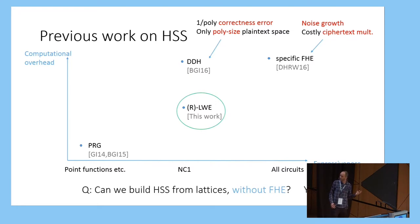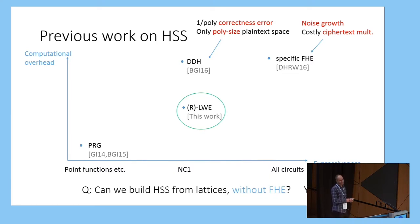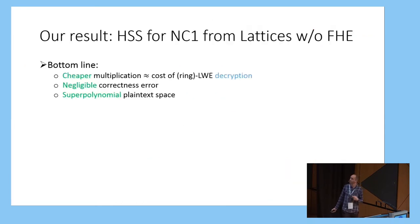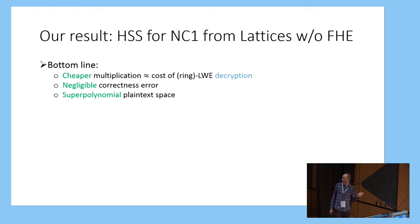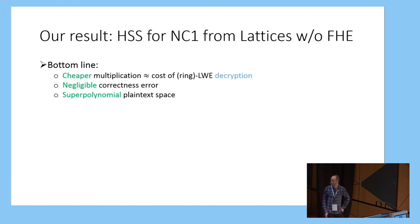The result we get fits somewhere in the middle of this picture: a construction of homomorphic secret sharing for NC1 circuits based on lattices, which is more efficient than FHE. The bottom line is that we avoid the costly homomorphic multiplication procedure present in all known fully or even somewhat homomorphic encryption schemes, and we get something much cheaper — roughly akin to the cost of just a decryption operation in a lattice-based encryption scheme. In practice, this can be up to around an order of magnitude faster.